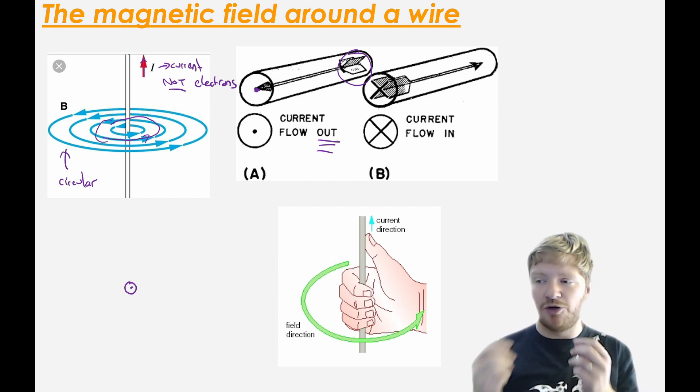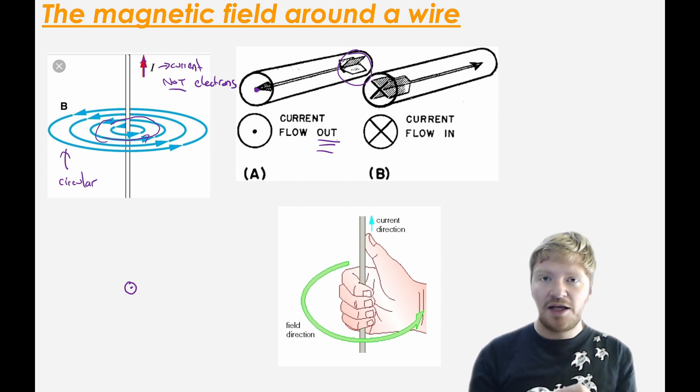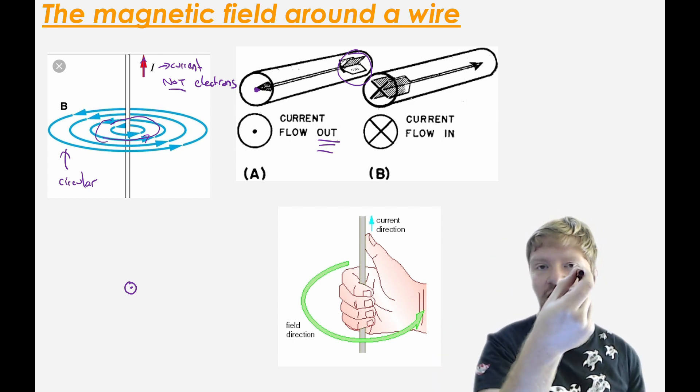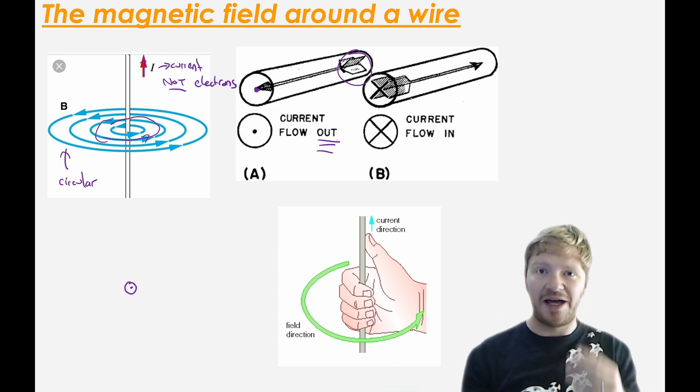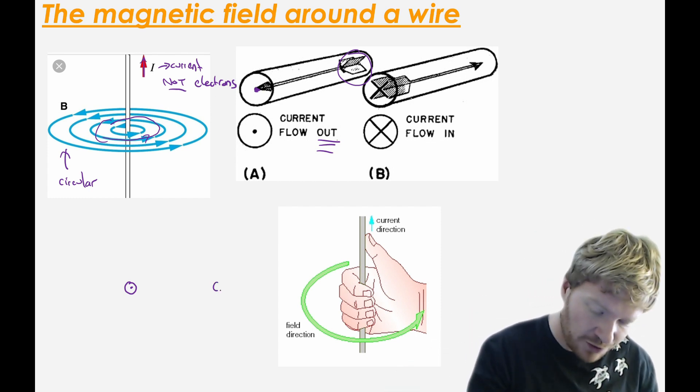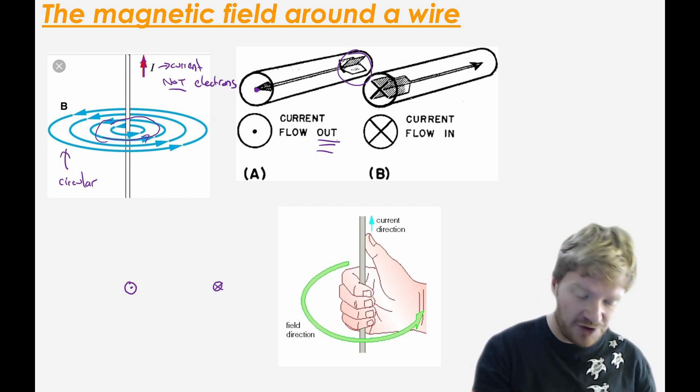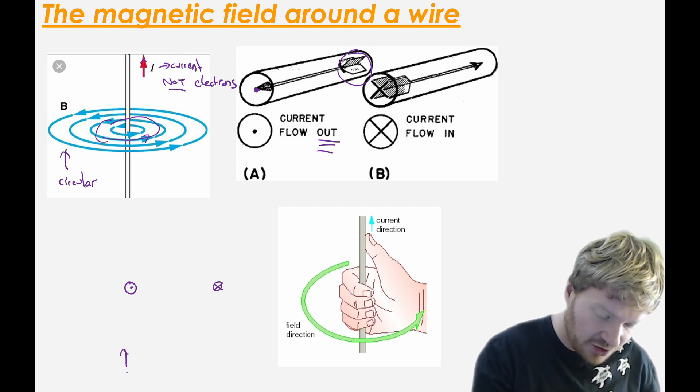If you throw a dart at me, you will see the cross on the back as it leaves. So if I want to draw a wire coming out of the page, I would draw it like that. I draw a cross. So for this one here, this one is going into the page. For this one here, it's coming out.